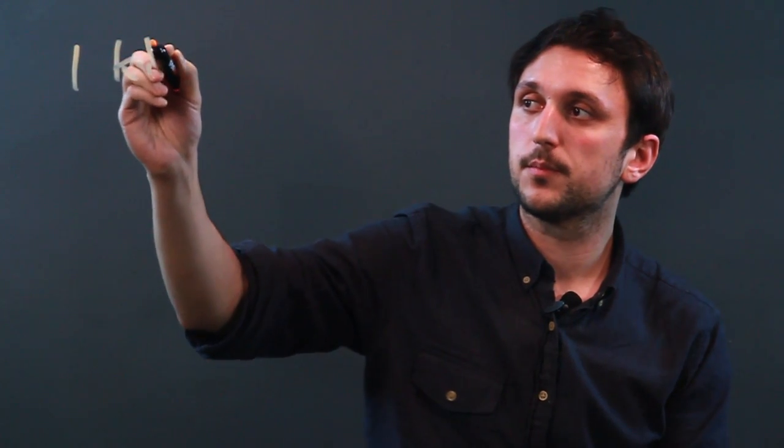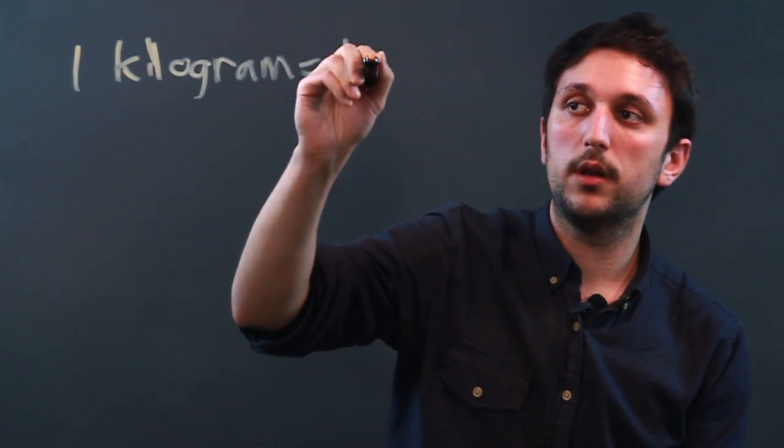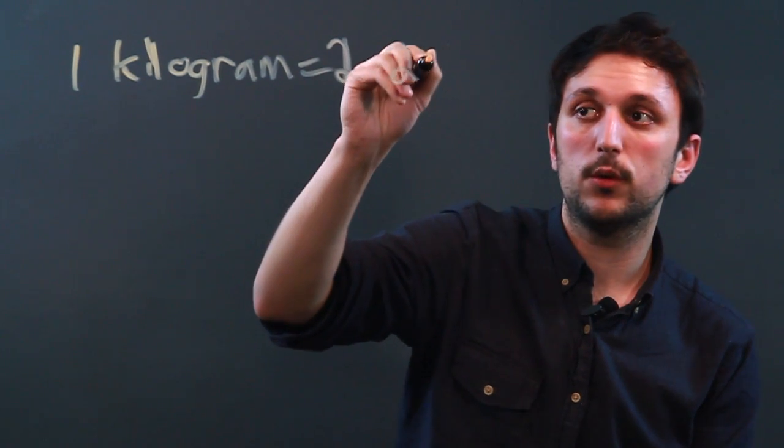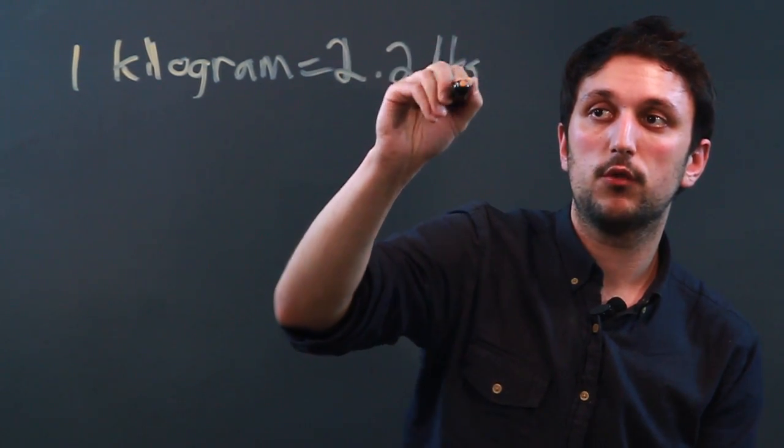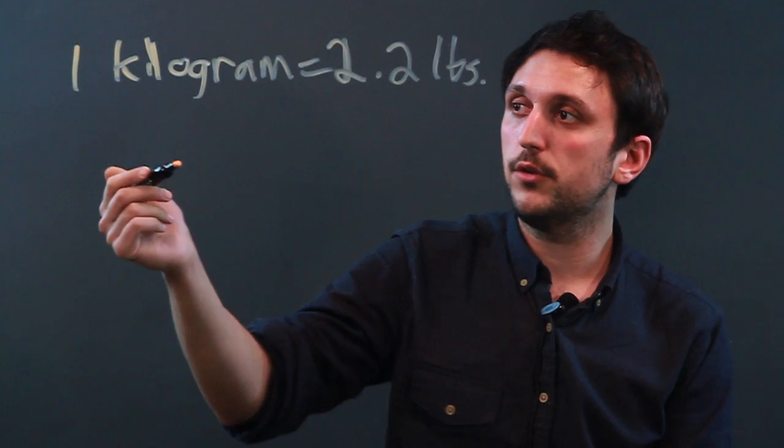So when we look at it, one kilogram equals 2.2 pounds, which we shorthand with lbs. So one kilogram equals 2.2 pounds.